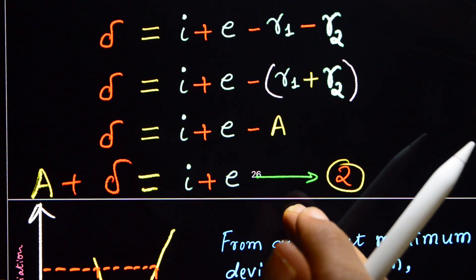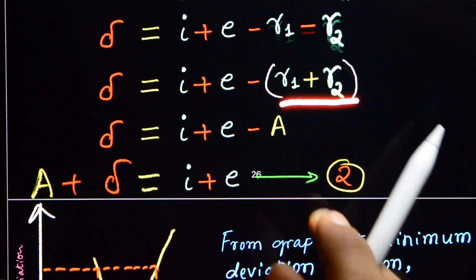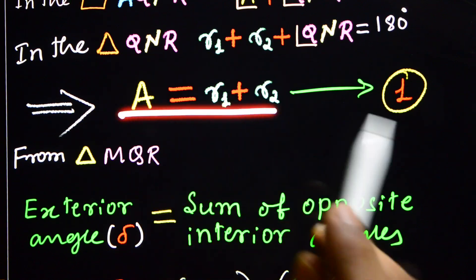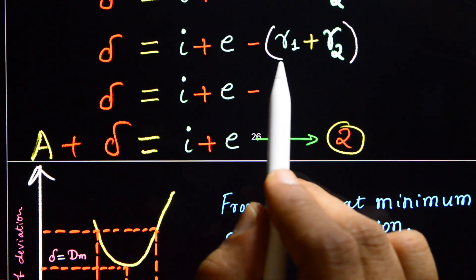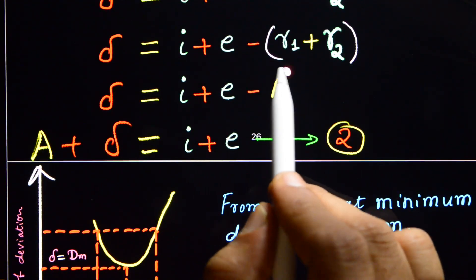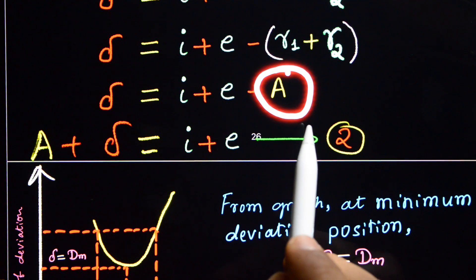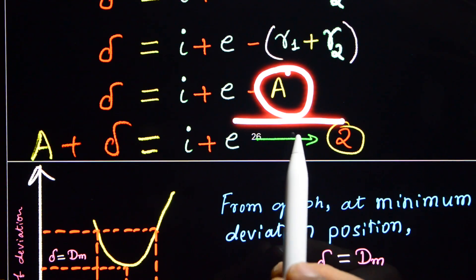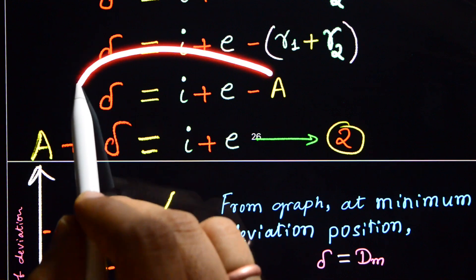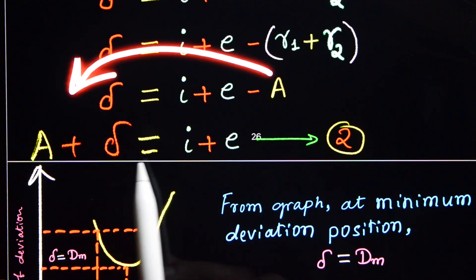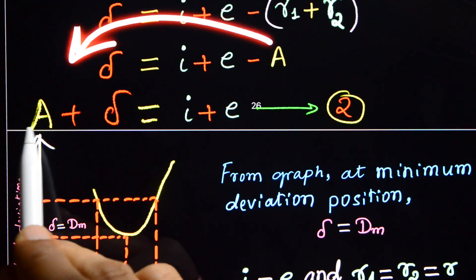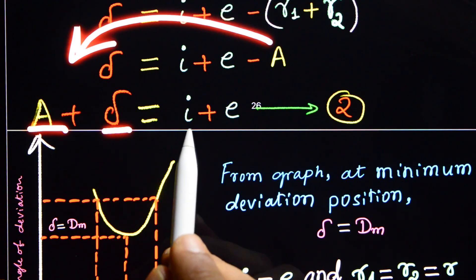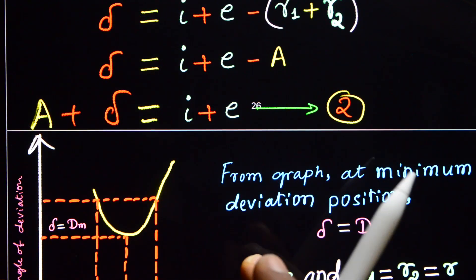From equation 1, R1 plus R2 equals A. Substituting into the expression for delta, instead of writing R1 plus R2 we write A. Rearranging: A plus delta equals I plus E. This is equation 2.